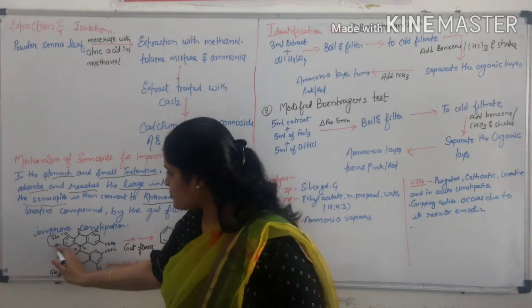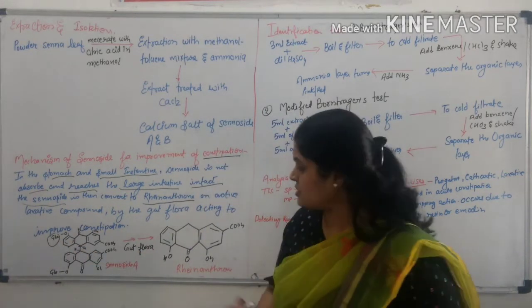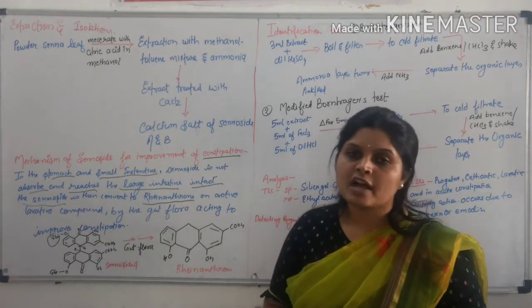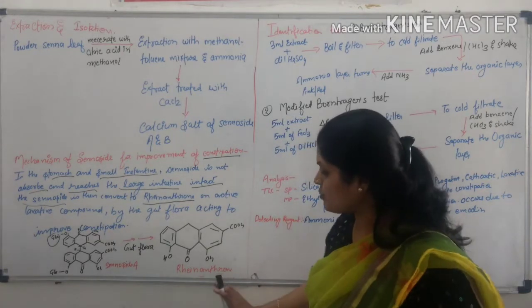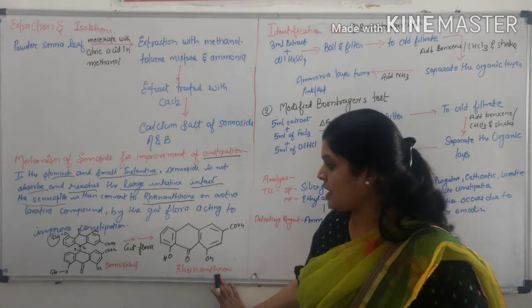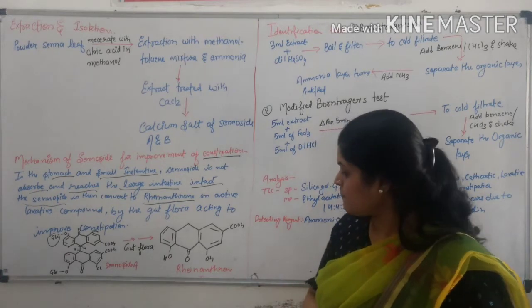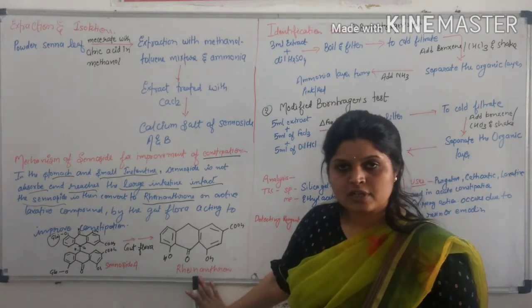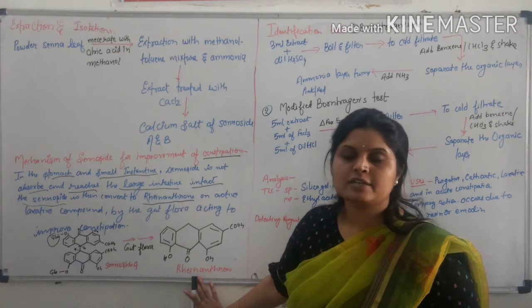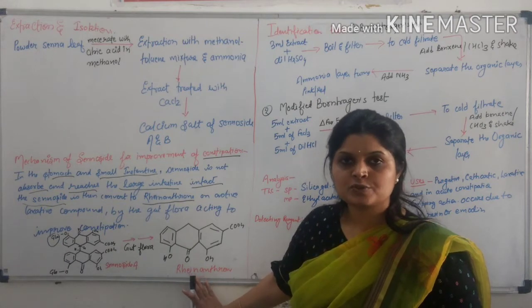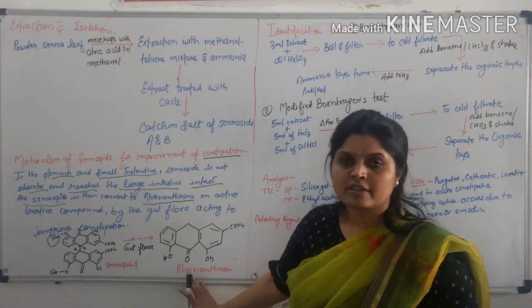So, where pump is responsible for the transporting of aglycone portion or rhein anthrone. And aglycone portion is the main component which is responsible for the cathartic action.